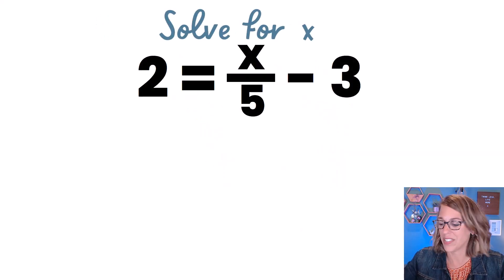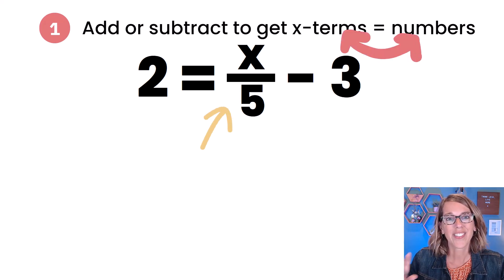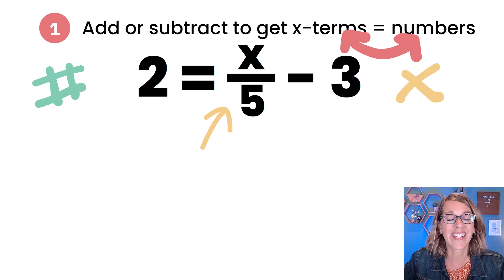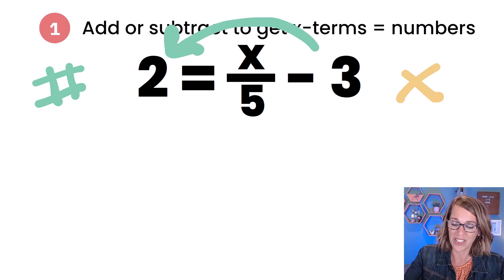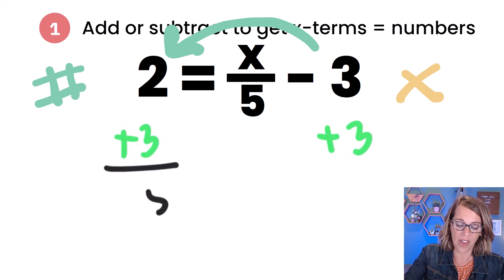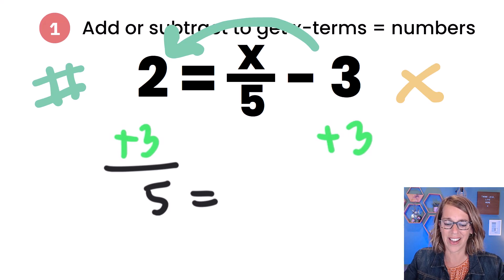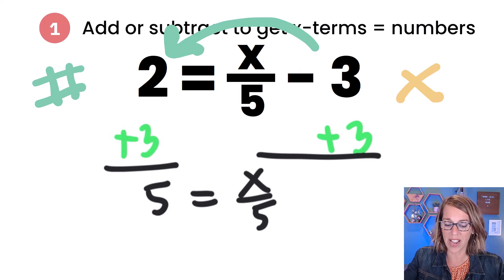Here's another one where I want to solve for x. My first step is to still get x terms on one side and numbers on the other. But notice that x is on the right-hand side. So let's swap the order this time and get numbers on the left and x terms on the right. That means I want to add that 3 to undo that negative 3. So let's add 3 to both sides. I end up with 2 plus 3, which is equal to 5. On the other side, I've got x divided by 5, or x over 5. And then that 3 and the minus 3 are equal to 0. We're ready for our second step.